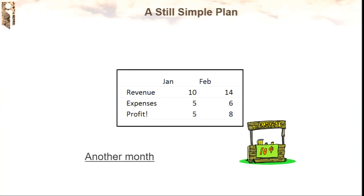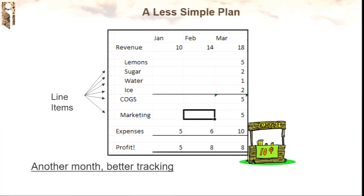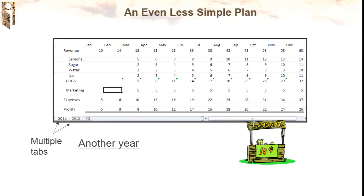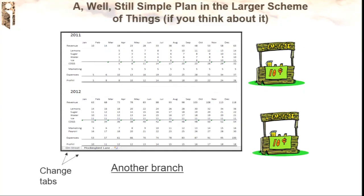They're selling lemonade and want to track what they're doing. First month: revenue, expenses, profit — no problem. Then the next month: a two-dimensional model with accounts down the side and months across the top. Two dimensions — January, February — Excel is doing great. Then I've got another month, I've added accounts to my chart of accounts for better analysis. Getting a little farther out — been in operation an entire year — I need to add a Year dimension, so I use the next tab. I basically get three dimensions in Excel: rows, columns, and tabs.